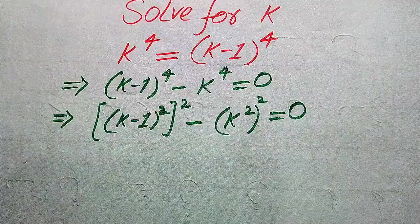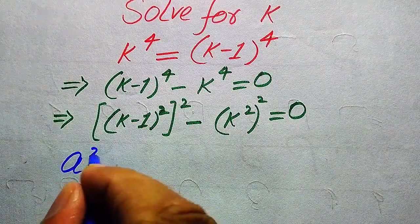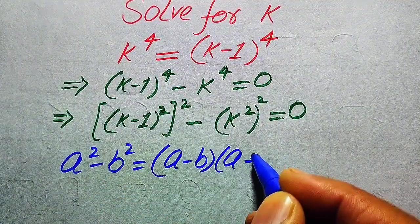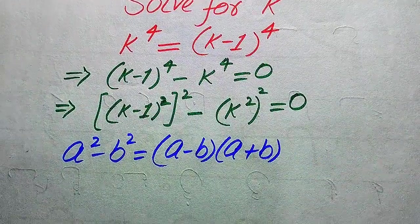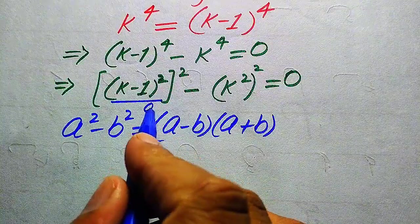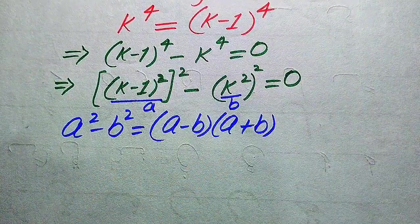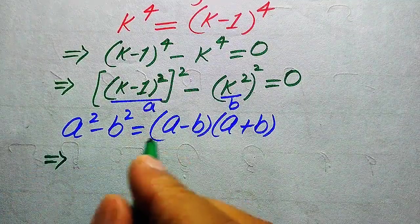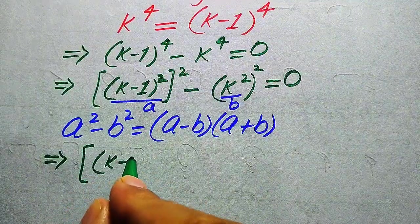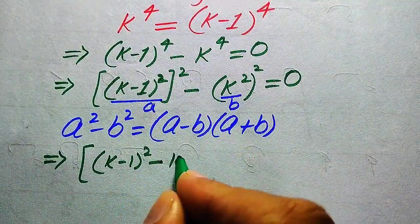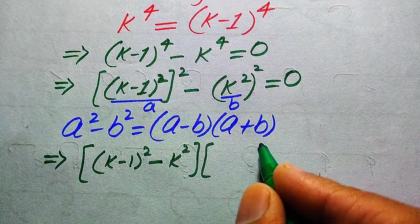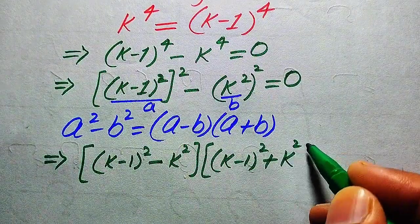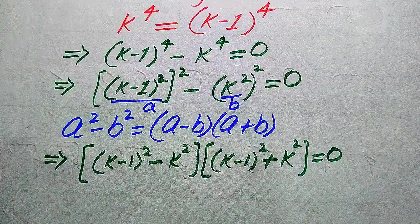In the next step we use the algebraic formula: a² minus b² equals (a minus b)(a plus b). Here the base of the first term is our a, which is (k-1)², and the base of the second term is our b, which is k². Applying this formula, we write: [(k-1)² minus k²] times [(k-1)² plus k²] equals 0.